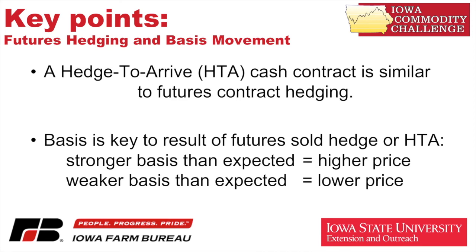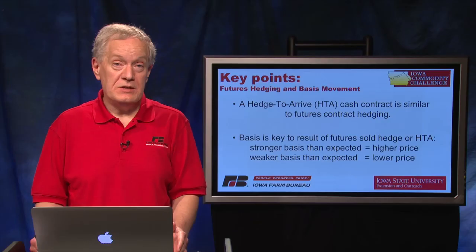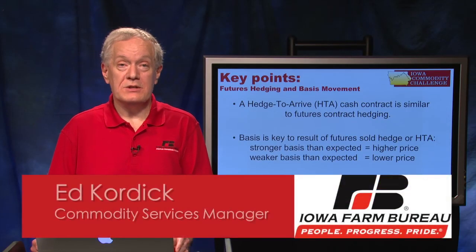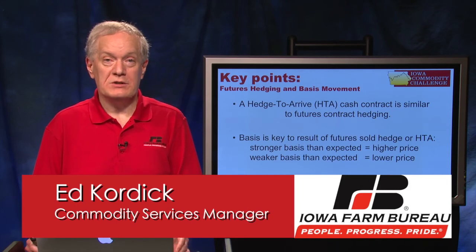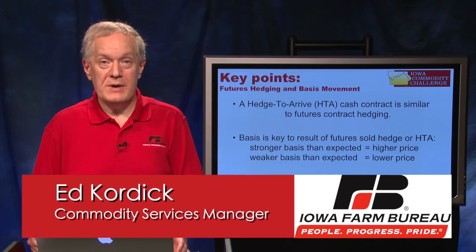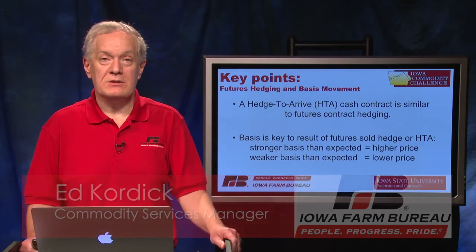If basis is better or stronger than expected, our net price in that first example is going to be better. If basis is wider or weaker than expected — more negative — that price is going to be lower than we expected. These videos and this video and the others in the series are in support of the Iowa Commodity Challenge, a marketing simulation that you can participate in, with information on the same webpage where you accessed this video.